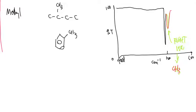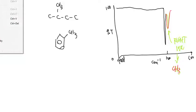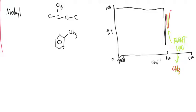All right, guys, so now that we're finished with the functional groups, we can kind of go through and begin to talk about the history of infrared spectroscopy. Where did it come from? How did it start? And what goes on in IR as far as pieces and parts go?